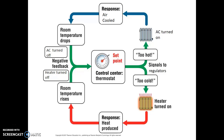Conversely, if your thermostat detects that it's too cold inside your house, a message will be sent to your heater, and the heater will turn on, starting to warm the air in the house. This will cause the room temperature to rise. Once we've reached back to that set point, a message will be sent to turn the heater off. Even though we're looking at two different responses, both of them are controlled by negative feedback, because both of them ultimately turn themselves off.